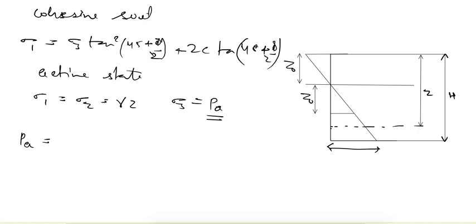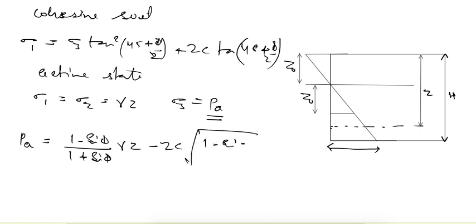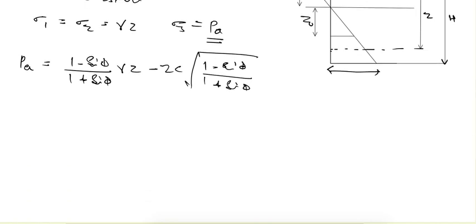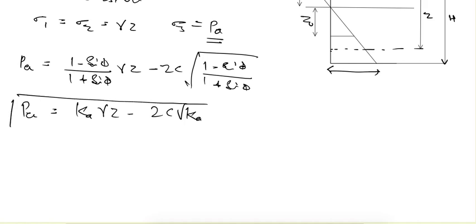From here, the active pressure can be written as Pa = [(1 - sinφ)/(1 + sinφ)]·γz − 2c·√[(1 − sinφ)/(1 + sinφ)]. The term (1 − sinφ)/(1 + sinφ) is the active earth pressure coefficient Ka, so Pa = Ka·γz − 2c·√Ka. This is the basic formula for active earth pressure in cohesive soils.